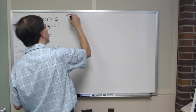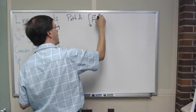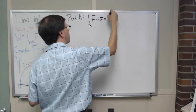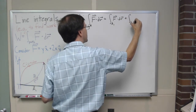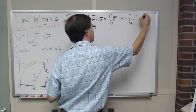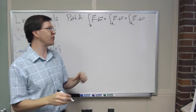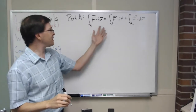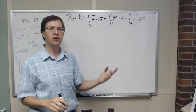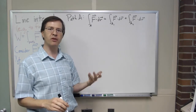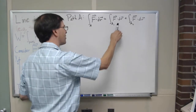For path A, my integral of force dot product dr is going to be broken into an integral along path A1 of force dot product dr, plus an integral along path A2 of force dot product dr. Along any path I need to know what dr is in terms of some parameter, because dr is a vector. In general, dr is going to be dx x̂ plus dy ŷ — I'll leave out z since we're doing two dimensions here.